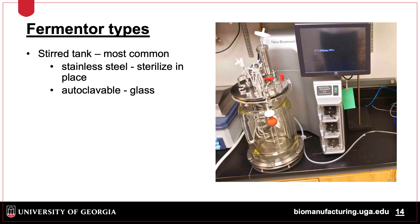The equipment used in the fermentation process, which involves growth of bacteria or fungi, is called a fermenter. There are three types of fermenters, with the most common being the stirred tank. This consists of a stainless steel or glass tank inside of which the media is mixed with microorganisms and dissolved oxygen.